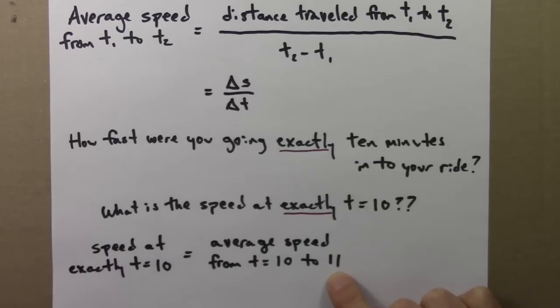But you might object and say this can't be right because the speed might be changing. Maybe you're speeding up or slowing down a lot as you go from minute 10 to minute 11. So this really isn't your speed at exactly t equals 10. This could be changing. This is not an accurate way of looking at it.